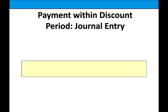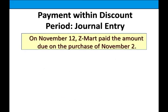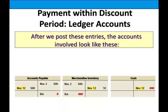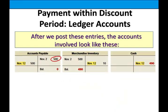Let's assume we paid early — by November 12th, we pay only $490. We credit cash $490 and debit accounts payable for the full $500. The difference of $10 is a savings — a reduction in our inventory cost. Looking at the T-accounts: accounts payable had a $500 balance, we debited $500 to zero it out, and credited cash $490. Since we paid $490 instead of $500, we reduced the inventory cost by $10, so our inventory cost is $490.